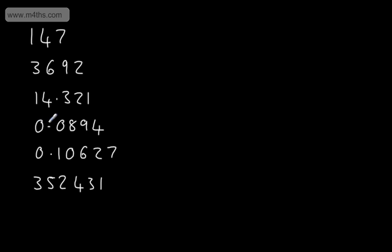We now need to look at 0.0894. When we read a number from left to right, the first significant figure is the one that has a value — the leading zeros are not significant. So the first significant figure is the 8, in the hundredths or 0.01 column. The second is the 9, in the thousandths or 0.001 column.